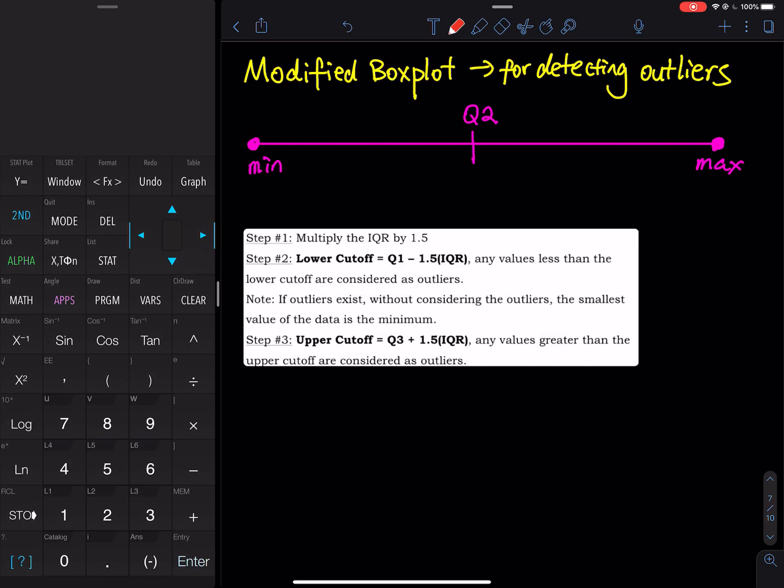So first, let's talk about the five number summary, and then I will show you the steps to construct a modified boxplot. So we have a line. Imagine that we sort the data in ascending order. The entire data represents this line. So we have a minimum, we have a maximum. First, we find the median. The median is Q2.